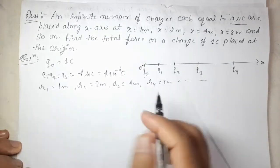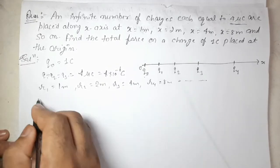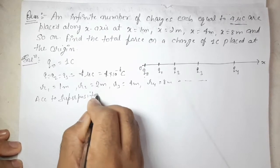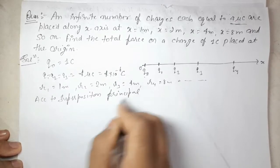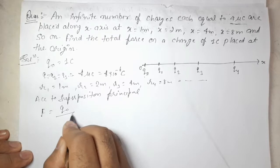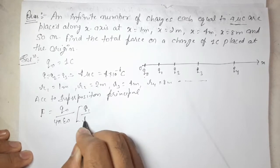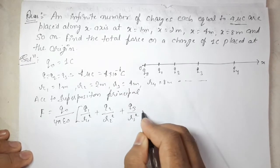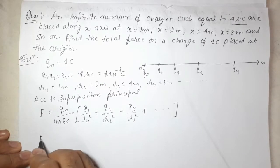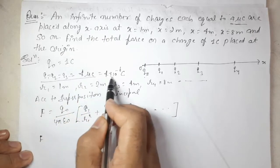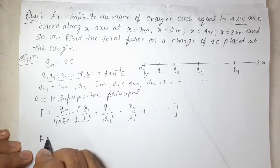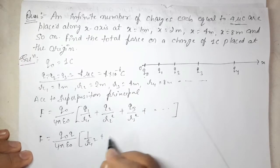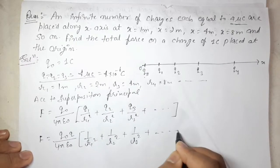According to the superposition principle, the net force F is equal to Q0 upon 4πε₀ multiplied by (Q1/R1² + Q2/R2² + Q3/R3² + ...). Since Q1, Q2, Q3 are all equal to 4 micro-coulomb, we can take Q common, giving: F = Q0 · Q / (4πε₀) × (1/R1² + 1/R2² + 1/R3² + ...).